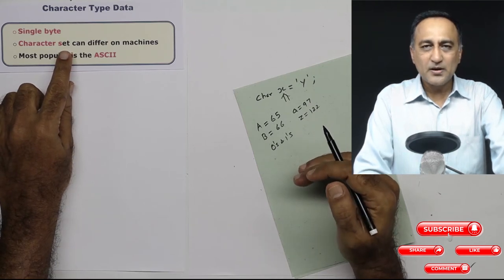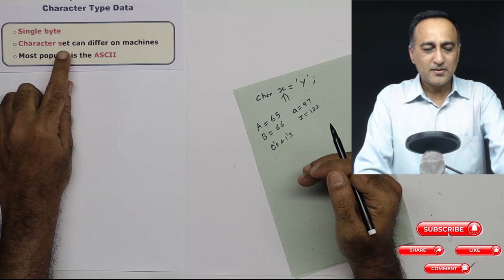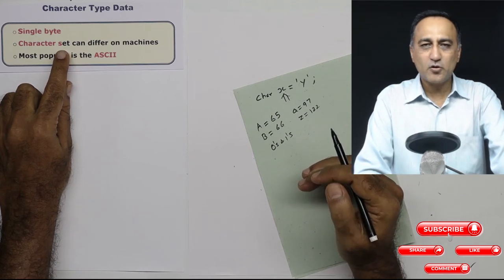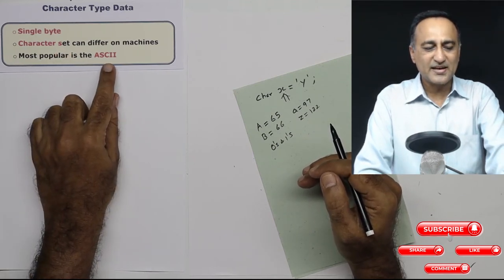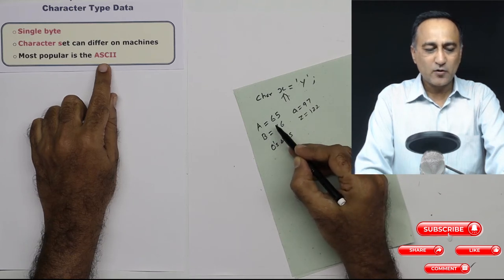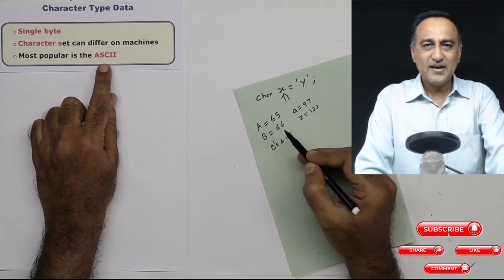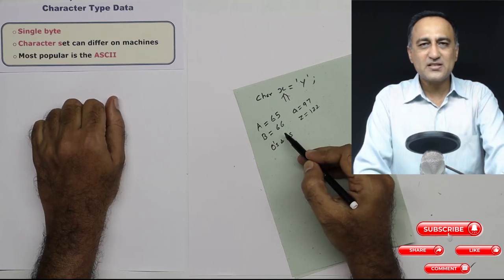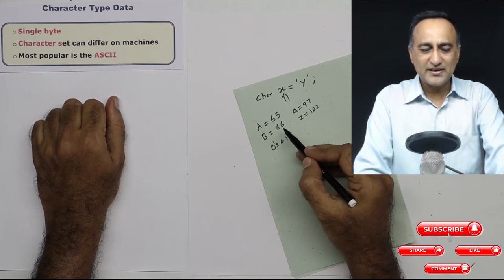There are many popular character sets available. But the one you're most likely going to always encounter is going to be the ASCII character set. So what I talked about, the values for characters, were according to the ASCII character set. ASCII stands for American Standard Code for Information Interchange.